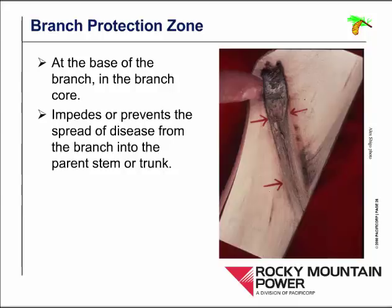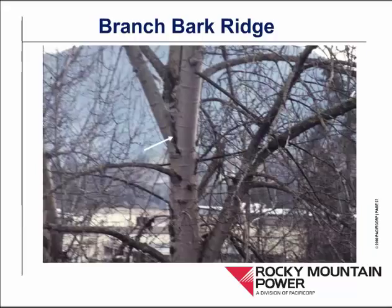Trees also have one other defense mechanism. Branches originate from a bud on a twig, so the core of the branch works its way all the way back from the base of its branch to the pith. In response to a wound in the branch, antimicrobial compounds will form in that branch core — what Dr. Shigo called a branch protection zone. Its job is to keep disease that may be in the branch from entering and spreading throughout the tree. Branch protection zones tend to be very strong; however, diseases can use energy stored in the branch itself to overcome the branch protection zone over time. Another important structure in trees is a branch bark ridge — at the base of branches we have an area of raised bark, caused by bark on the branch and bark on the parent stem colliding with one another and forming a little raised area.